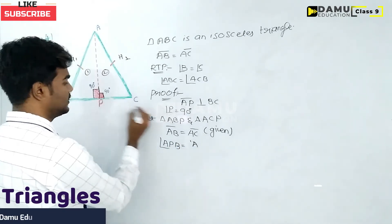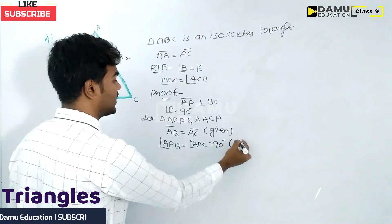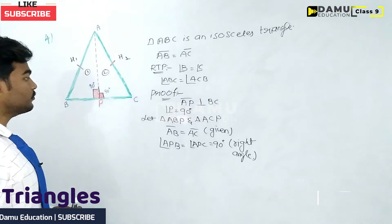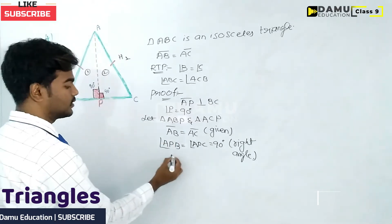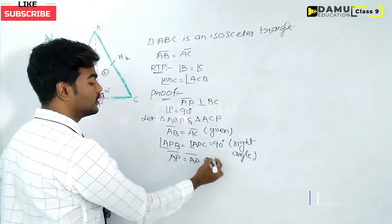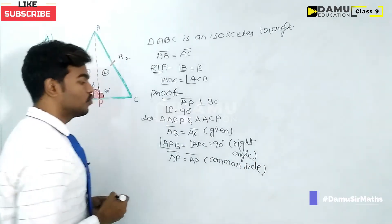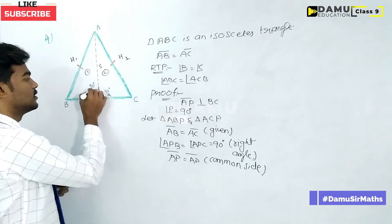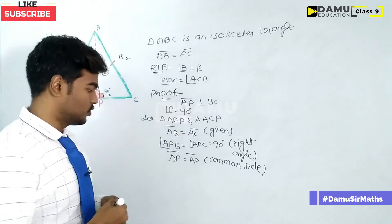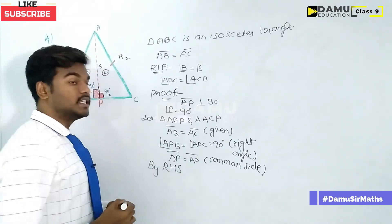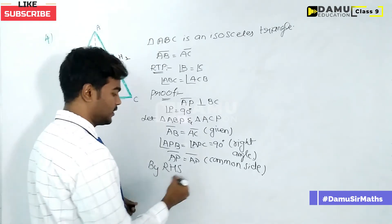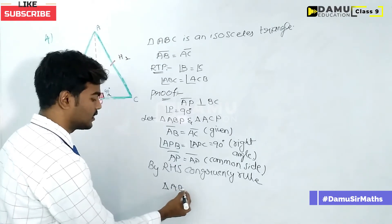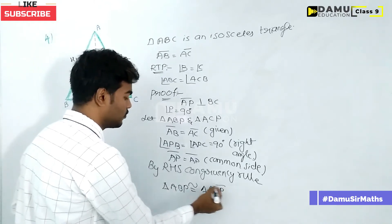Angle APB equals angle APC, both equal to 90 degrees — that is the right angle. And AP is the common side in both triangles. So we have right angle, hypotenuse, and side. By using the RHS congruency criterion — Right angle, Hypotenuse, Side — both triangles are congruent to each other. Therefore, triangle ABP is congruent to triangle ACP.